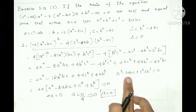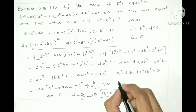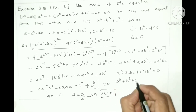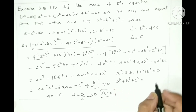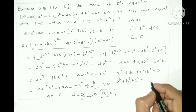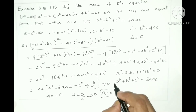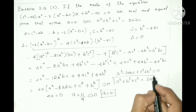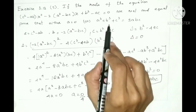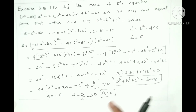For the second condition, the remaining factor: a cubed minus 3abc plus c cubed plus b cubed equals 0. Moving minus 3abc to the other side gives a cubed plus b cubed plus c cubed equals 3abc — second condition satisfied. Hence both conditions are proved.